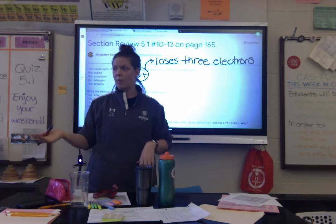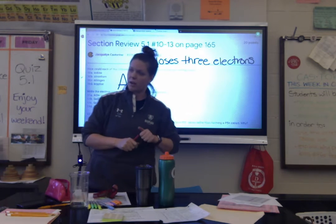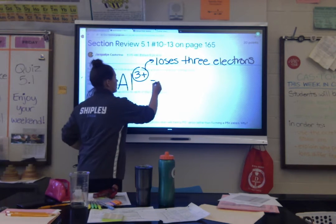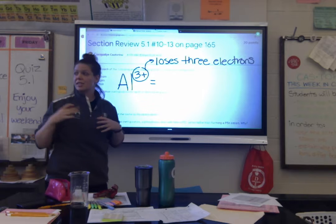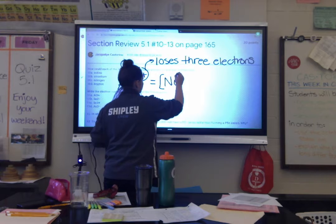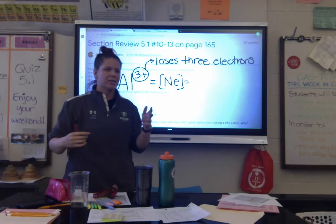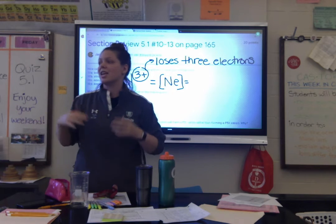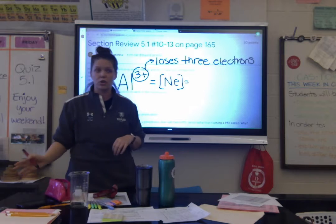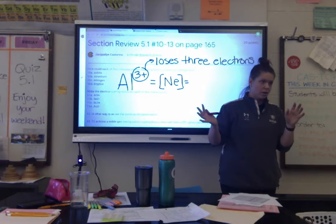Two negative means we are gaining 2 electrons. Positives mean losing electrons, so negatives mean gaining electrons — just like adding negative friends into your life makes you more negative. So selenium starts with 34 electrons and gains 2, giving us 36 electrons. Which element on the periodic table is number 36? Krypton. So Se²⁻ has the same electron configuration as krypton.